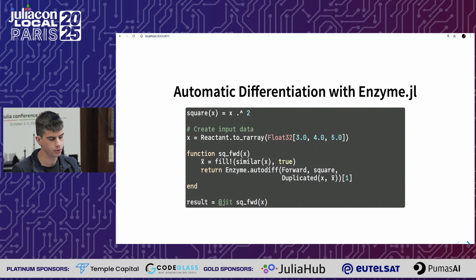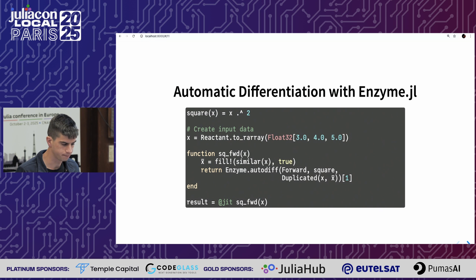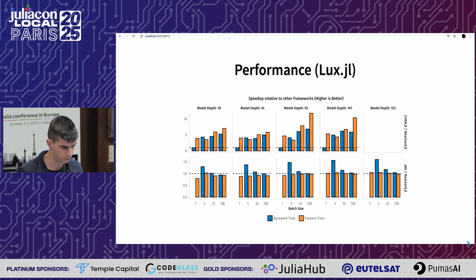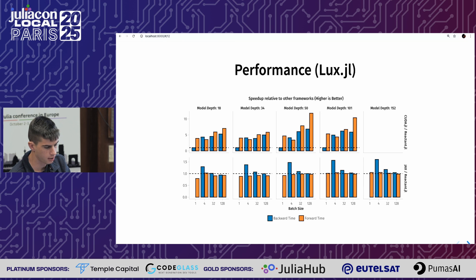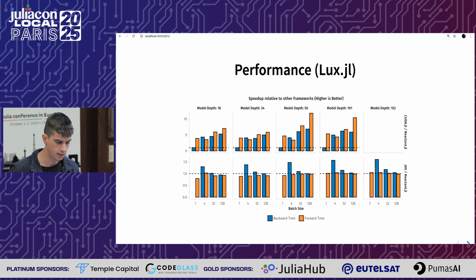Reactant also supports automatic differentiation through the Enzyme.jl package, using the same API as Enzyme.jl, and it can be compiled by Reactant. Reactant implements all the rules for the array operations it tracks. Custom rules are not yet supported unfortunately. Performance-wise, since Reactant sees the whole compute graph of array operations, it performs better than CUDA.jl or NNlib implementations with the Lux.jl model. Compared to JAX, which also sees the total compute graph, Reactant performs better in backward time because it optimizes before performing AD and then optimizes again after.